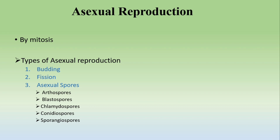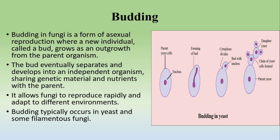The first type of asexual reproduction is budding. A bud is an outgrowth from the parent organism. As shown in the diagram, this is the parent yeast cell with its nucleus. In the next step, the bud forms and then the nucleus divides, giving the bud its own nucleus, followed by cytoplasmic division.